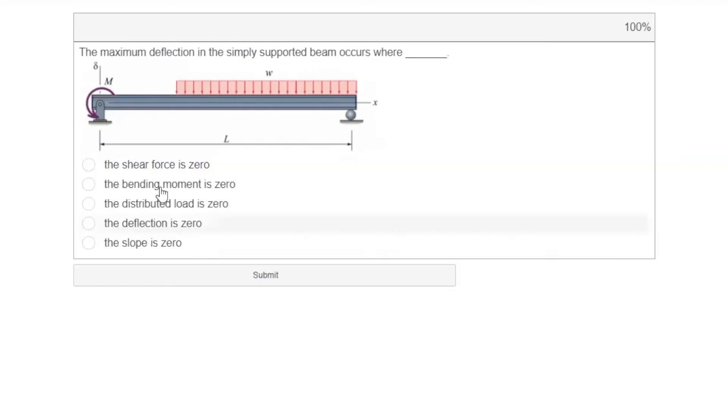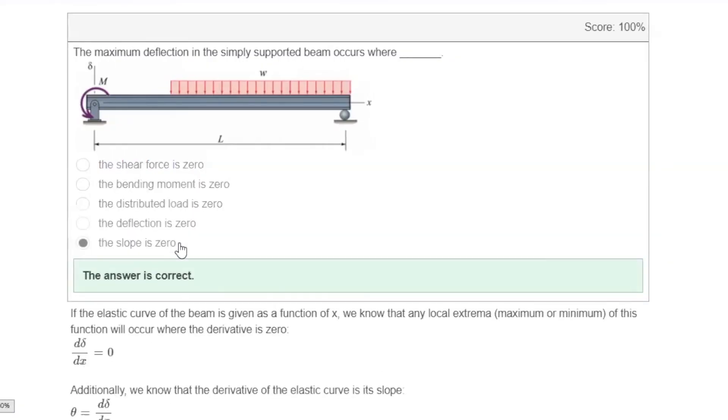This problem says the maximum deflection in this simply supported beam that is subjected to a moment on the left side and a distributed load occurs where, and there are these options. Where do we expect to see the maximum deflection? The maximum deflection happens where the derivative of that function is equal to zero. What is derivative of deflection? That is slope. So it is going to be maximum where slope is zero.